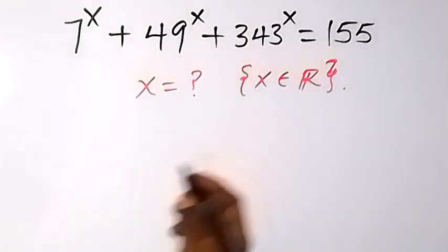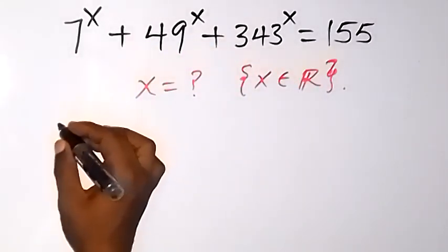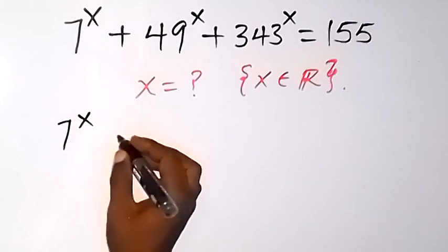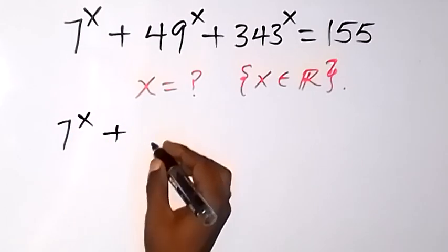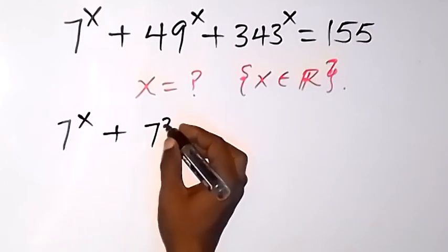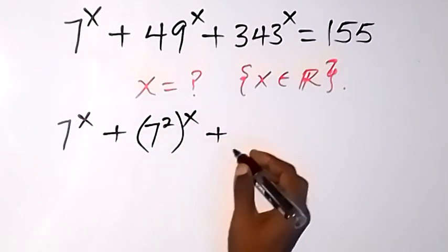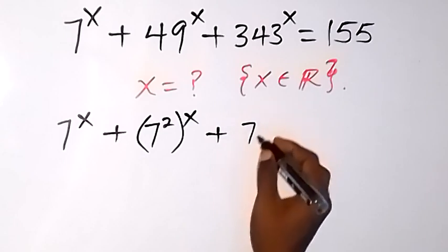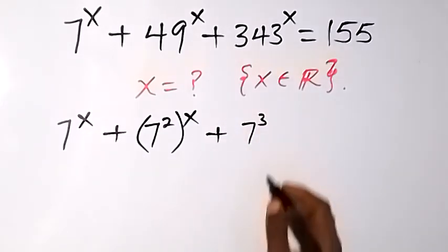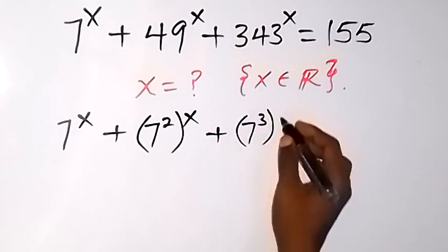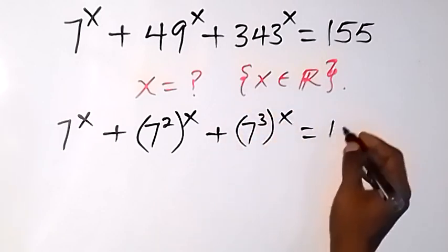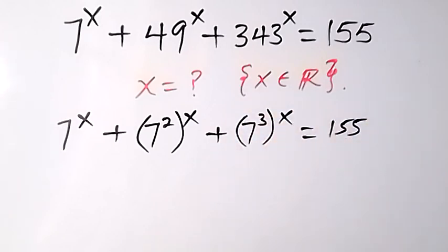We can write this equation again as 7 raised to power x. Then 49 can be expressed as 7 raised to power 2, all raised to power x. Plus we have 7 raised to power 3, which gives us 343, all raised to power x, which equals 155.